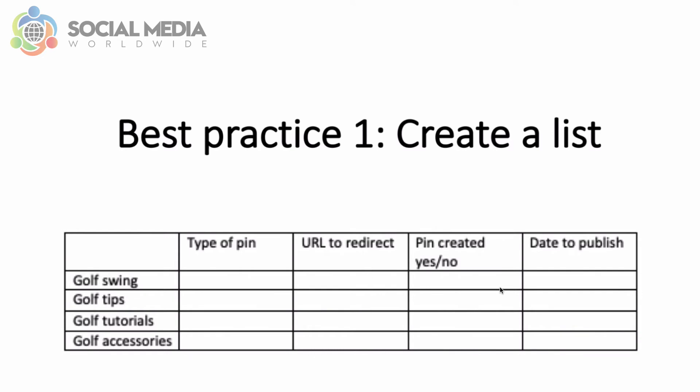You might want to add columns to that list: one for the types of pins you'll create — such as video pins, infographics, or static images — another with the URL you'll redirect people to when they click your pin, another stating whether the pin has been created yet, and one last column for the date the pin will be published.